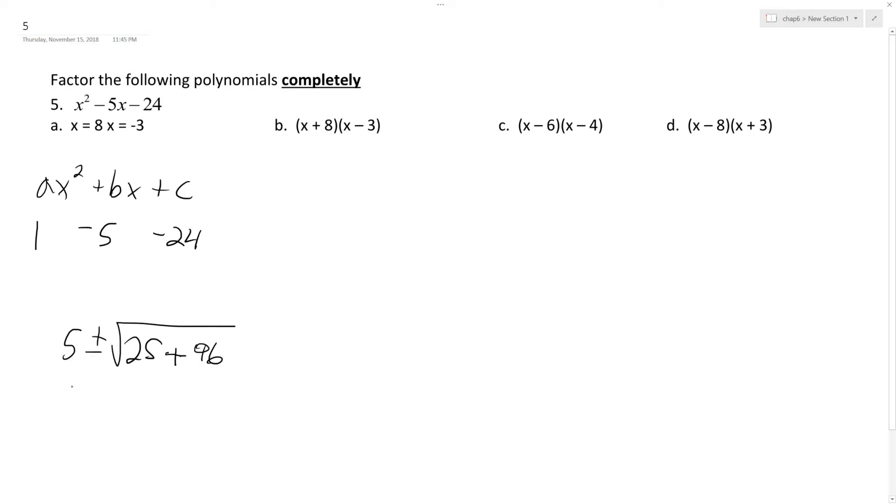That ends up being equal to 121. This is 121 under here, 2A. So 2 times A is just 2.